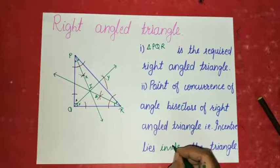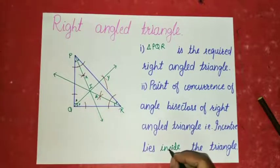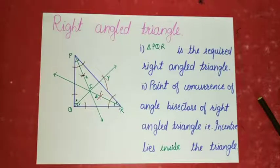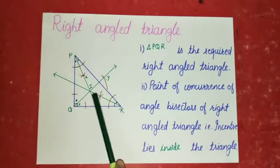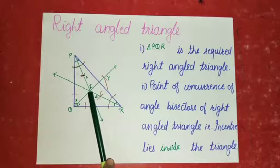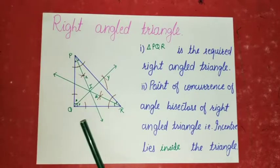We have completed the construction of the incenter in the right angle triangle. We have now seen all three constructions — acute angle triangle in the previous video, and obtuse angle triangle and right angle triangle today. In all three constructions, we have seen that the incenter lies inside the triangle. Therefore, do all the constructions carefully and neatly, and complete your work. Thank you.